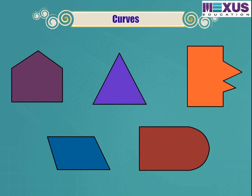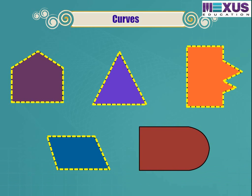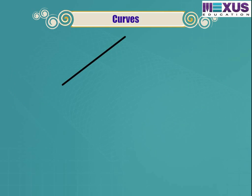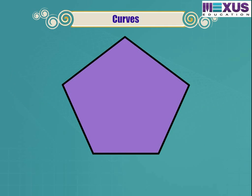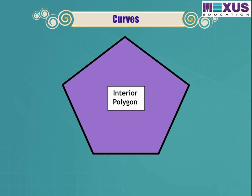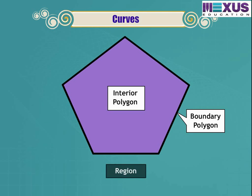Look at these figures. Some are entirely made of line segments while some have curved lines. A simple closed figure with a definite number of line segments is called a polygon. A polygon separates a plane into three parts: the interior of the polygon, the boundary of the polygon, and the exterior of the polygon. The interior together with its boundary is called its region.